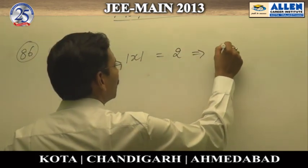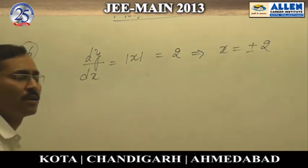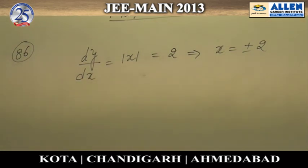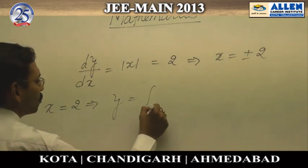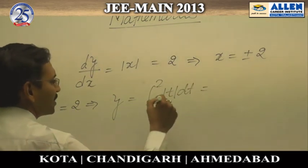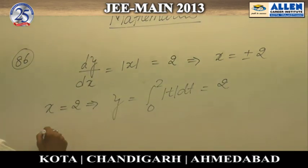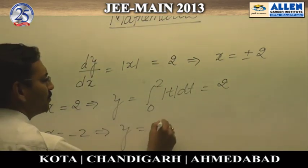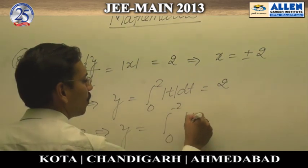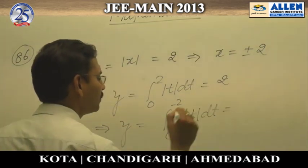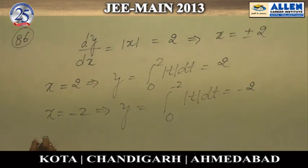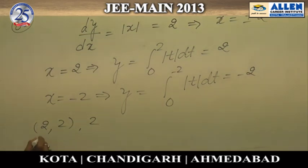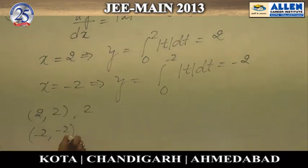If the slope is 2, the x-coordinate of the point will be either 2 or minus 2. If x equals 2, we calculate y using the given function y equals integral from 0 to 2 of mod t dt, which simplifies to 2. When x equals minus 2, y equals integral from 0 to minus 2 of mod t dt, which simplifies to minus 2. So we have the points (2, 2) and (minus 2, minus 2), both with slope 2.